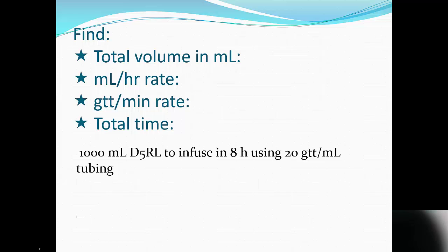For our first example, we have 1,000 milliliters of D5RL to infuse in 8 hours, and we're using the 20 drop per milliliter tubing. So what we see that we're asked for is more details than just the drop per minute rate.